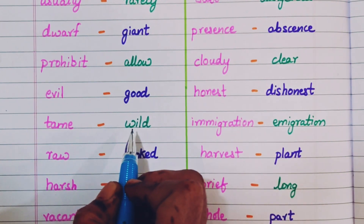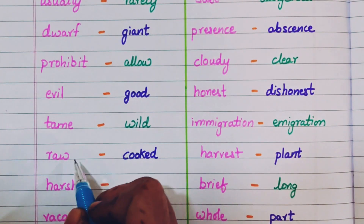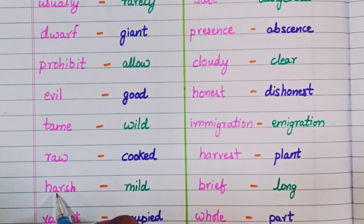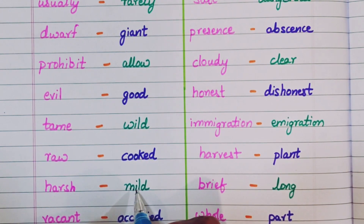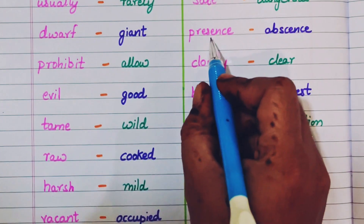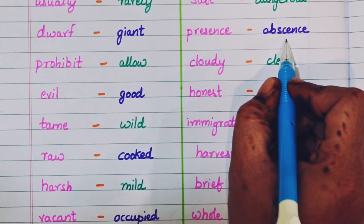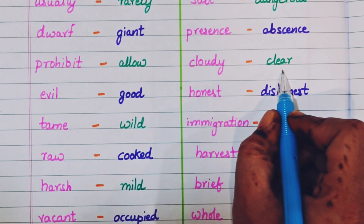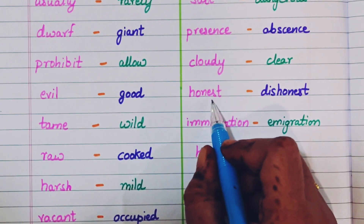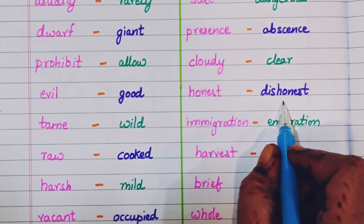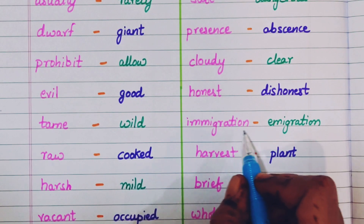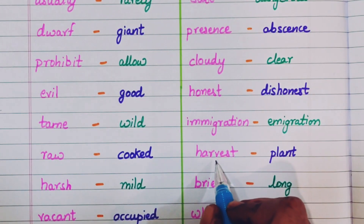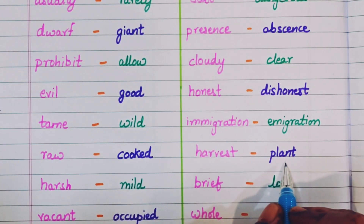Tame, wild. Raw, cooked. Harsh, mild. Presence, absence. Cloudy, clear. Honest, dishonest. Immigration, emigration. Harvest, plant.